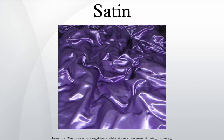Satin is a weave that typically has a glossy surface and a dull back. The satin weave is characterized by four or more weft yarns floating over a warp yarn, or vice versa, four warp yarns floating over a single weft yarn. Floats are missed interfacings, where the warp yarn lies on top of the weft in a warp-faced satin and where the weft yarn lies on top of the warp yarns in weft-faced satins.